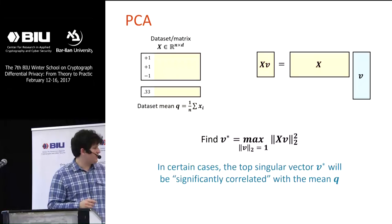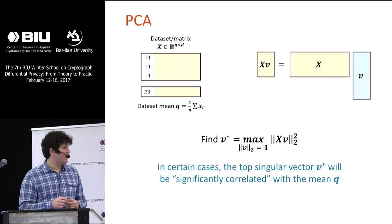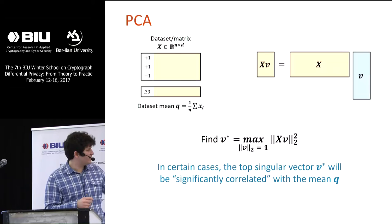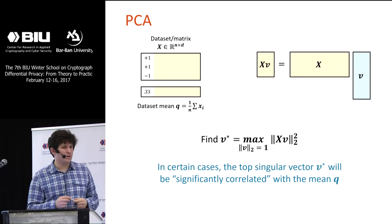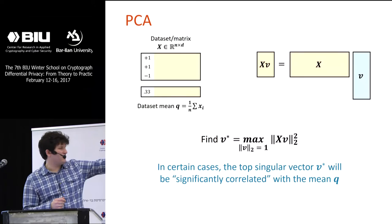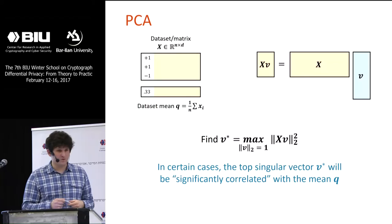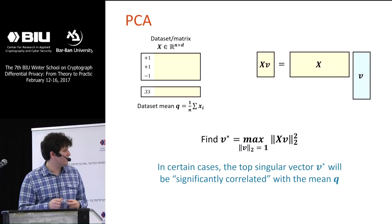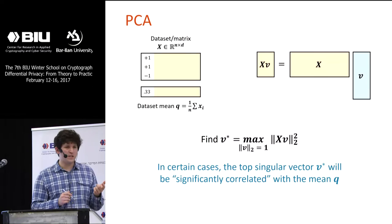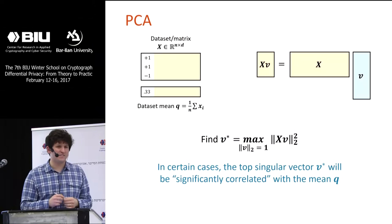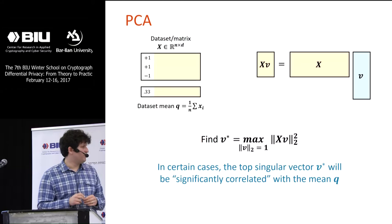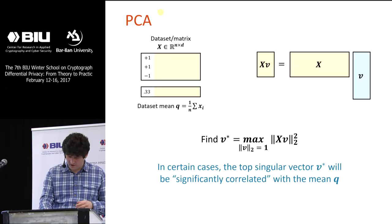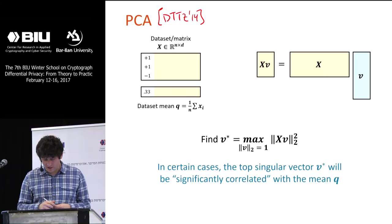Another example is PCA. You view your data as an n-by-d matrix and want to preserve privacy of the rows. The top principal component is the unit vector V on the right that maximizes the norm of XV — a very common problem. The top singular vector is not the mean, but if there are very biased columns, the top singular vector will put a lot of weight on those columns, which is enough to make the attack work. There's a nice paper by Dwork, Talwar, Thakurta, and Zhang from 2014 that worked out lower bounds for PCA using similar techniques.